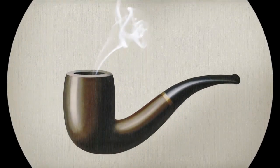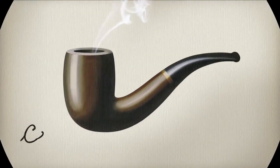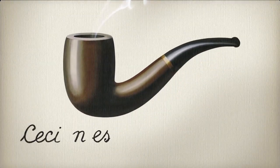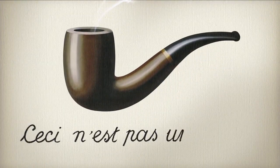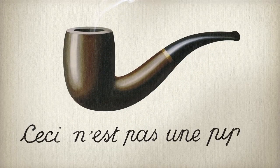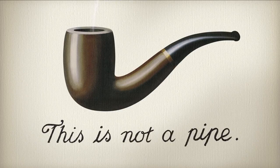In 1929, the Belgian surrealist artist René Magritte completed the Treachery of Images. The famous painting showed a pipe, and under it, this paradoxical inscription.